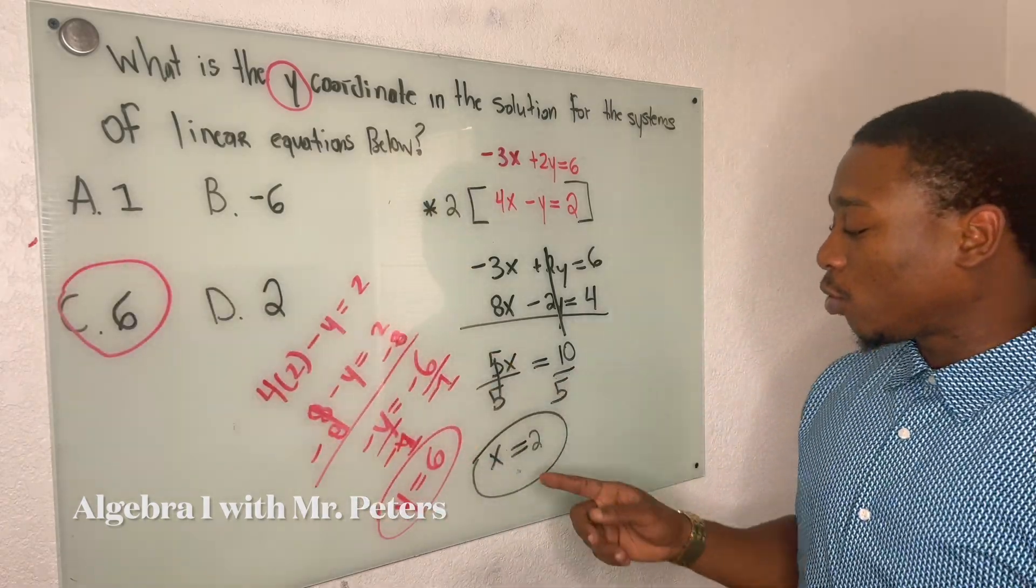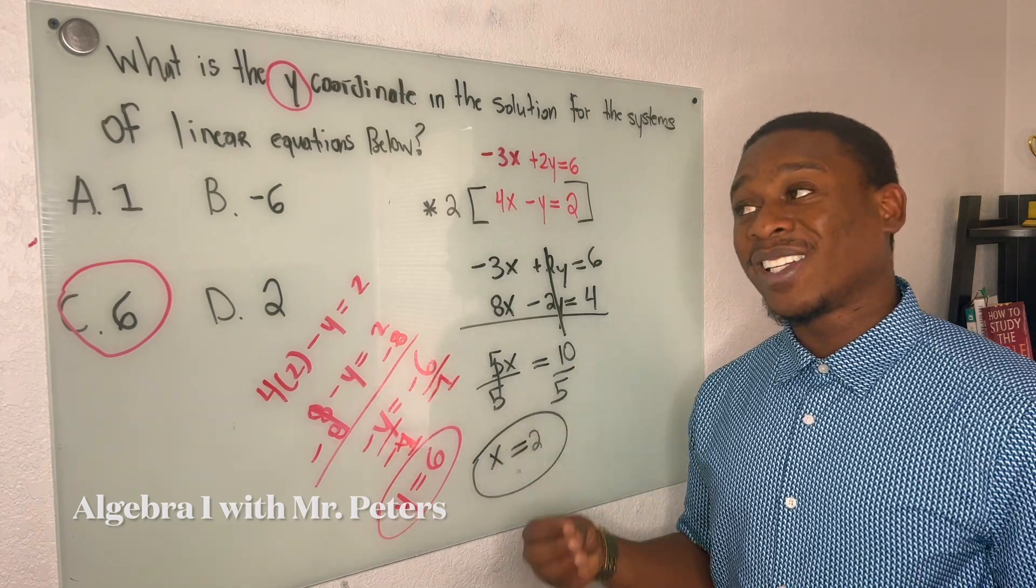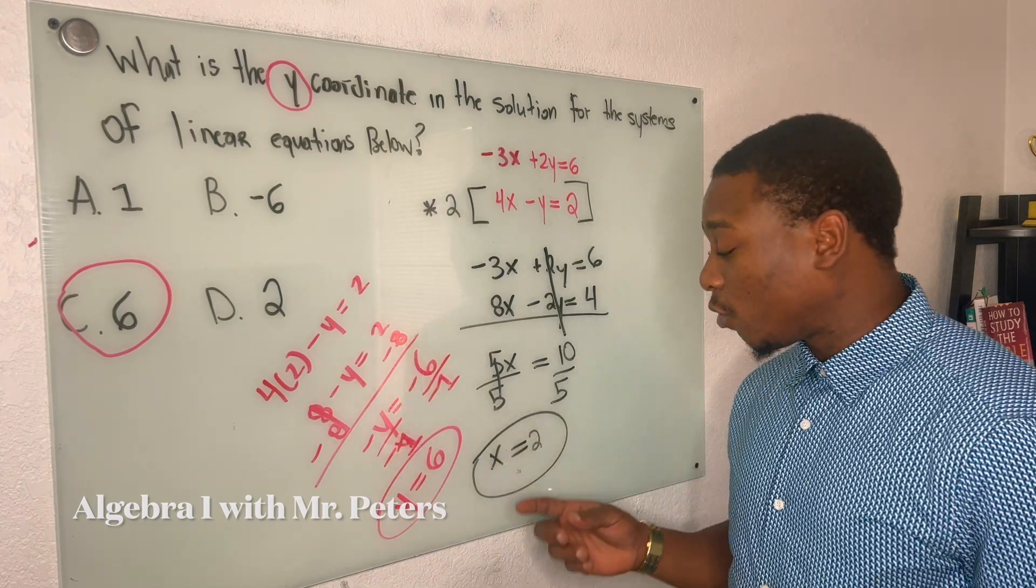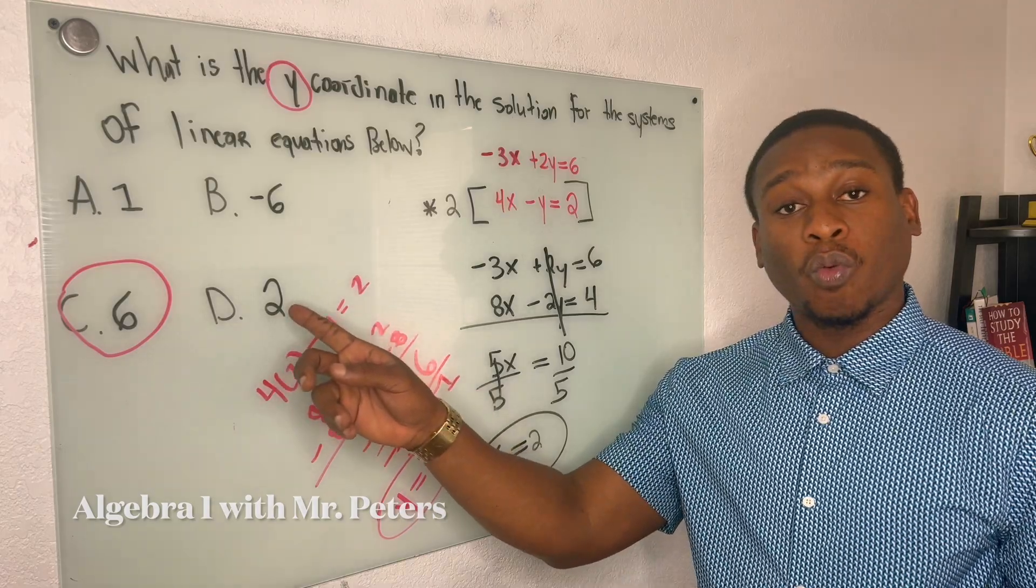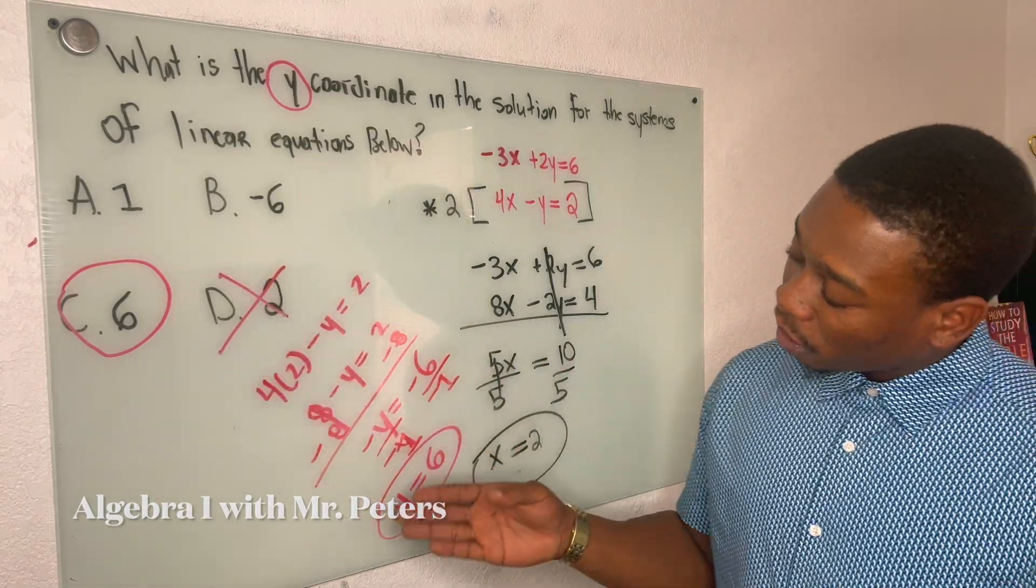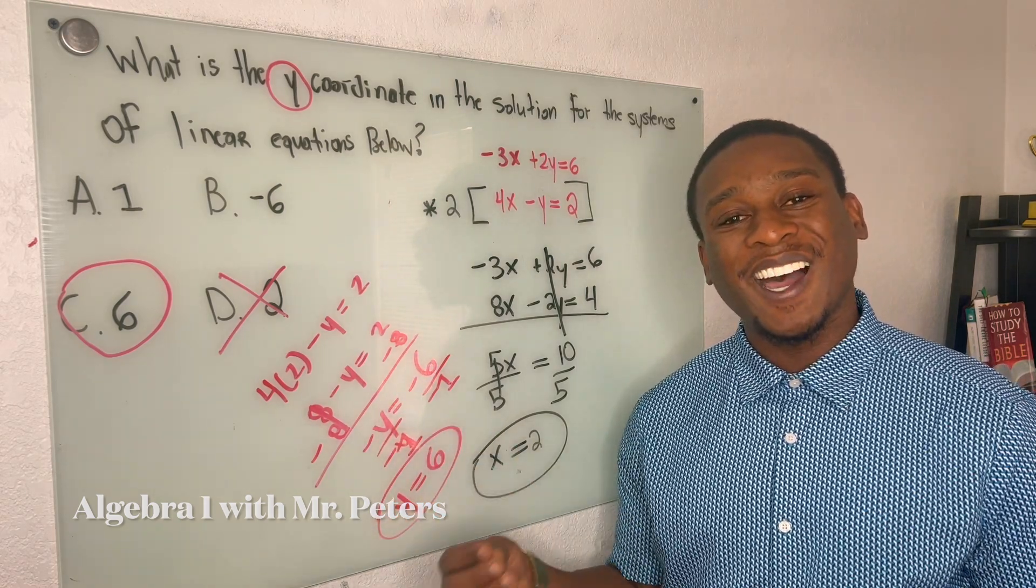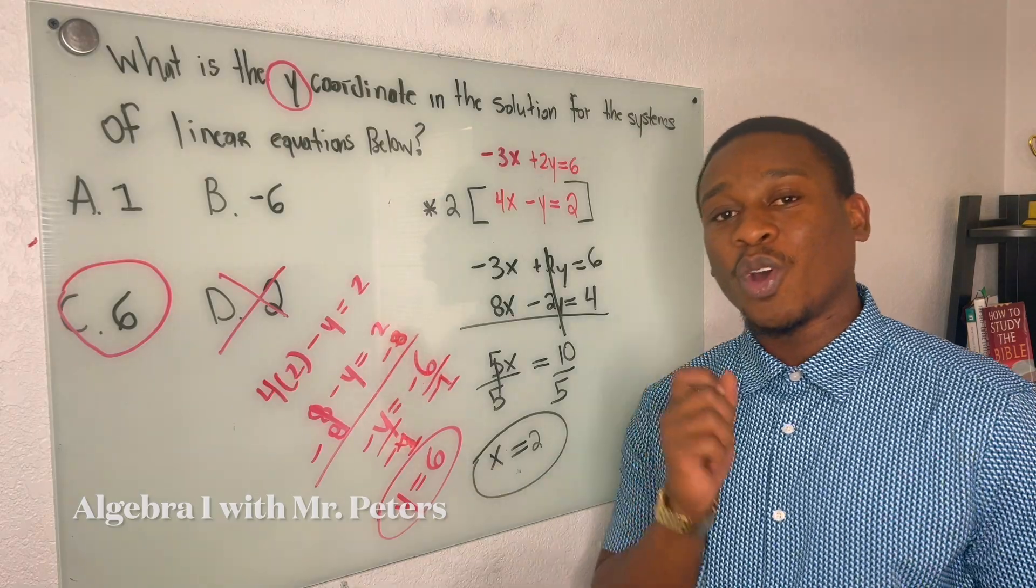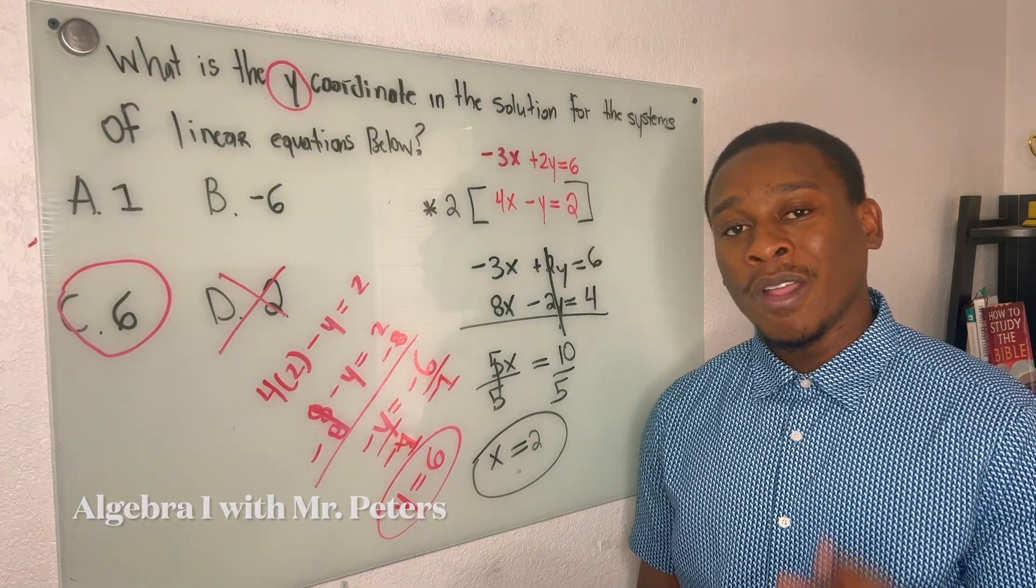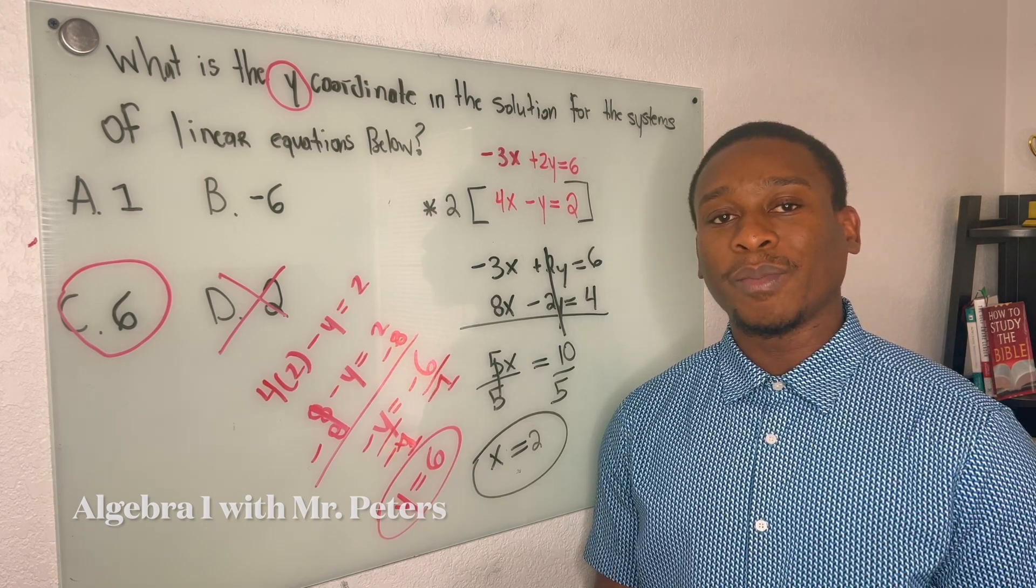So just make sure after you solve the first variable, we go back so that we can actually solve for y. Because if we move too fast, we're going to pick the wrong answer. And when we solve for y, just remember, x or y, when it's by itself, cannot be negative. So we hope you found this EOC review helpful. Thank you guys so much for joining us today. This is Algebra 1 with Mr. Peters.